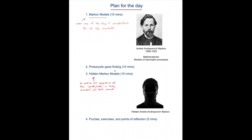I'll give you an example with prokaryotic gene finding — a really simple version of it — but I'd like you to think today about how this could be applied in other contexts. At the end, I give some examples and points of reflection to stimulate your capacity to take what you've learned with Markov models and move them forward. Really we need something called hidden Markov models, which are a slight modification of Markov models, and I'll explain that.